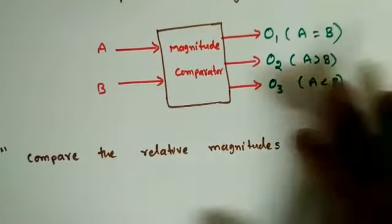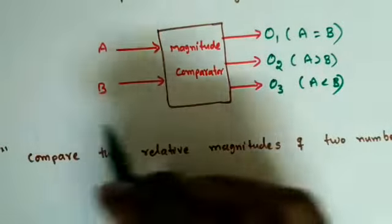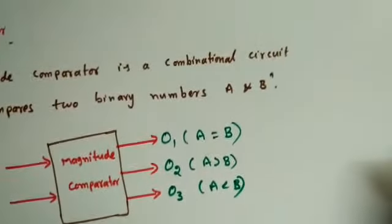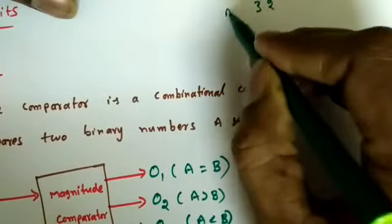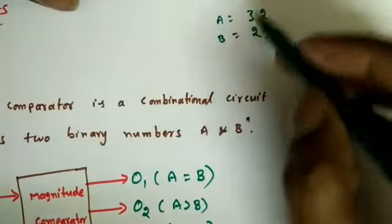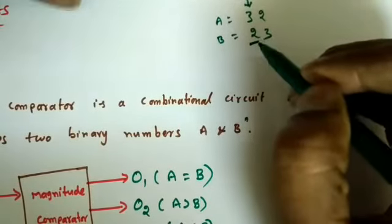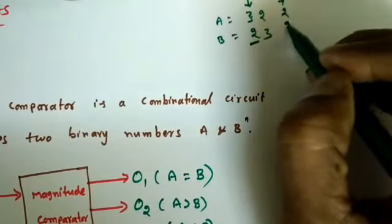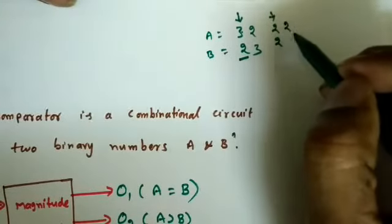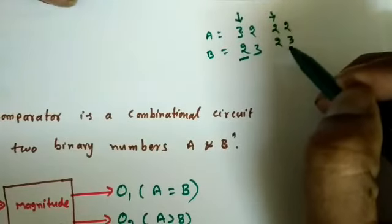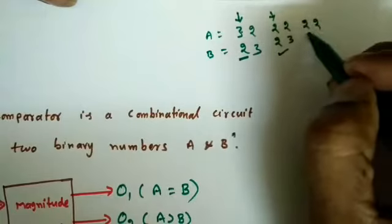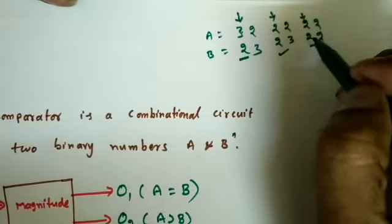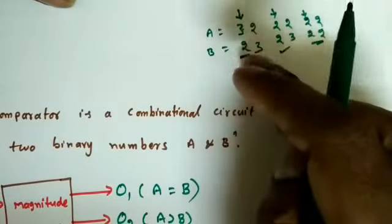In binary numbers we compare using the magnitudes — we compare the relative magnitudes of two binary numbers. For example, take decimal numbers: suppose A is 32 and B is 23. How can we say which one is greater? First we compare the MSBs — 3 is greater than 2, so directly A is greater than B. If both are equal we check the next bit. If A's next digit is 2 and B's is 3, then B is greater. If all digits are equal then the two numbers are equal.